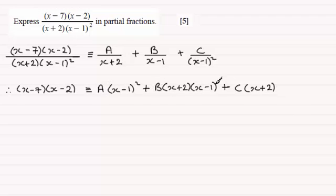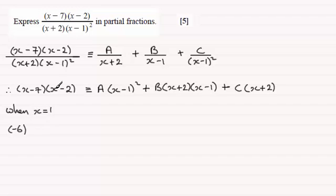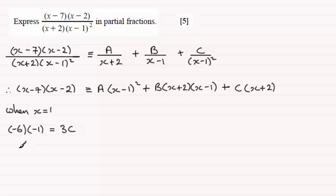Now we need to work out what the constants A, B, and C are. The way I'm going to do it is to let x equal 1 — that will make the (x minus 1) bracket zero, taking out those terms, which saves us having to do simultaneous equations. So when x equals 1: on the left we have (1 minus 7)(1 minus 2) = (minus 6)(minus 1) = 6. On the right, the A and B terms vanish, leaving C(1 plus 2) = 3C. So 6 equals 3C, divide both sides by 3, giving C equals 2.